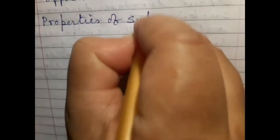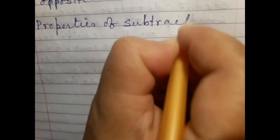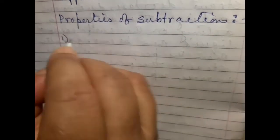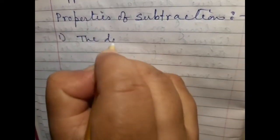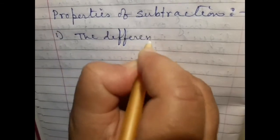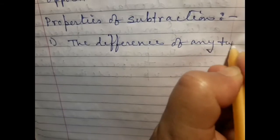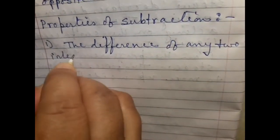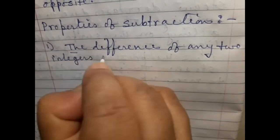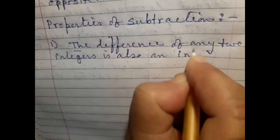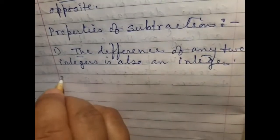Properties of subtraction. Number 1: The difference of any two integers is also an integer. Number 2.